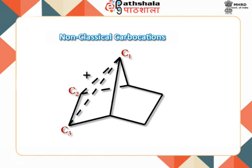Let us now understand what non-classical carbocations are. Non-classical means non-conventional, unusual, or different from classical. These are carbocations in which, rather than a particular carbon having the positive charge, the positive charge is delocalized over three carbon atoms as a bridged cation involving three-centre, two-electron bonding. Notice that these three carbon atoms are involved in three-centre, two-electron bonds.